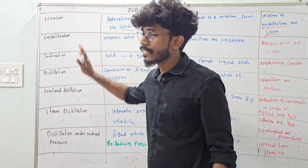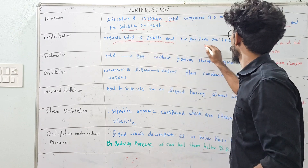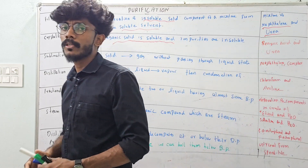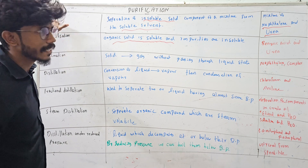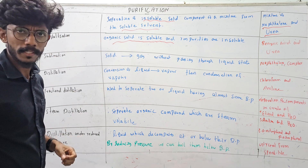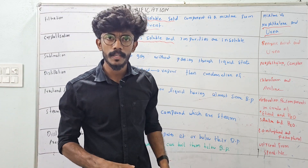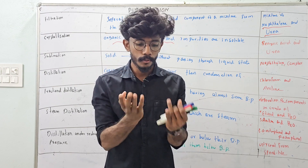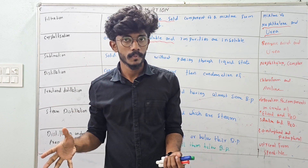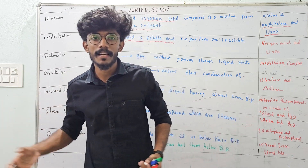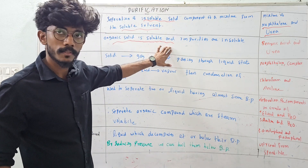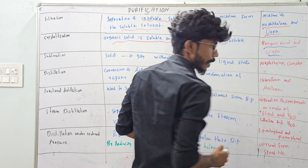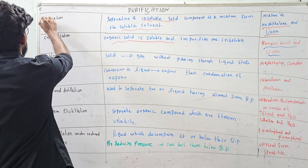The other technique is crystallization. Here, the organic compound is soluble and the impurities are insoluble. We use the crystallization technique for that type of mixture. The organic compound is soluble and the impurities are not soluble. Then we filter to separate them, and then we crystallize the organic compound. The example is benzoic acid. You can use a mixture of benzoic acid and urea with the filtration or crystallization technique.